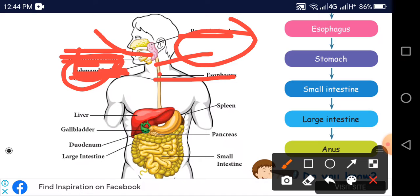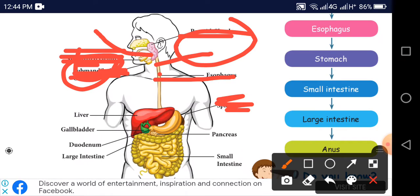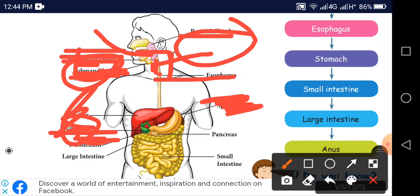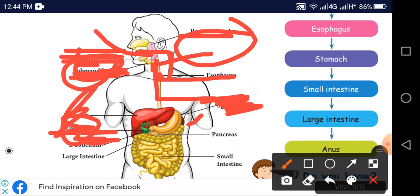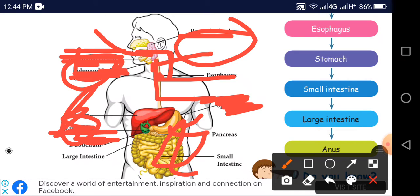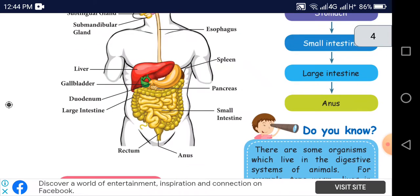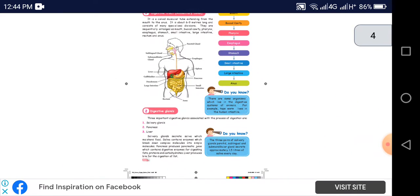Esophagus, pancreas. We have to learn the buccal cavity, esophagus, stomach, small intestine, large intestine and anus. Let's look at the structure. We have to do the structures.